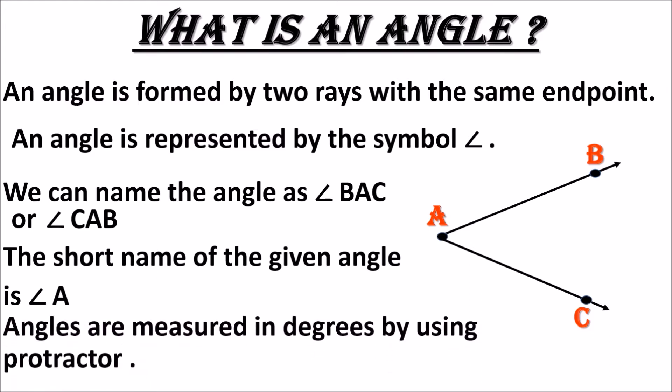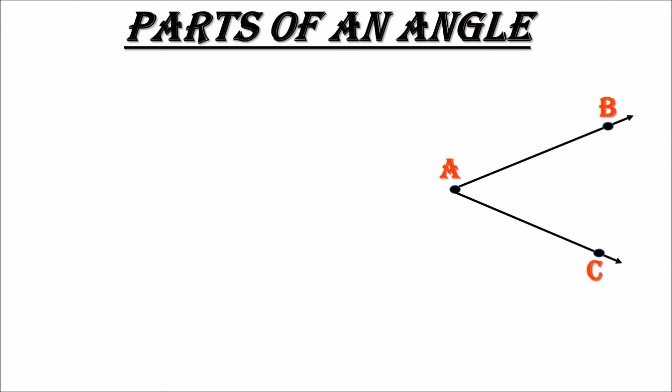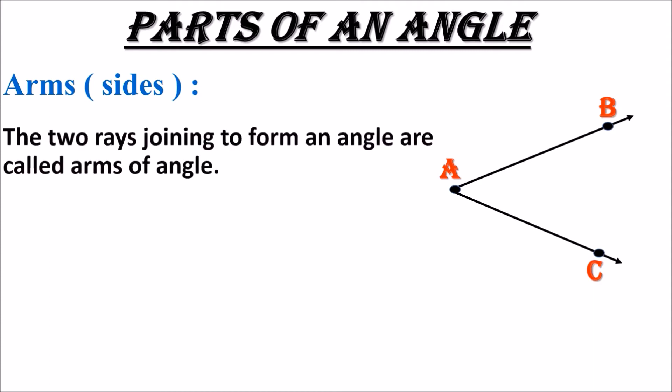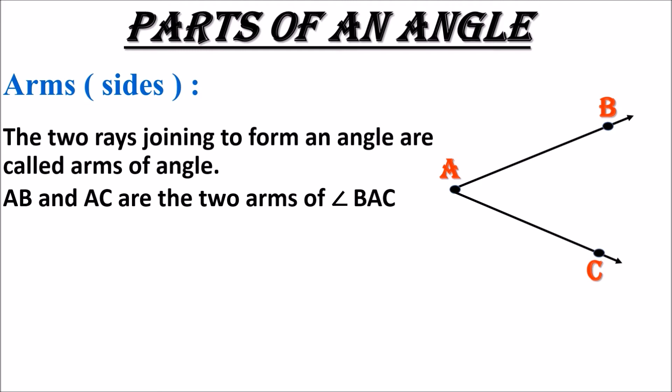Angle B, A, C. Angles are measured in degrees by using a protractor. The first part is arms or sides of an angle. The two rays joining to form an angle are called arms of an angle. Here we have ray AB and ray AC. Those two rays are called the arms of an angle, or sides of an angle. So AB and AC are the two arms of angle B, A, C.